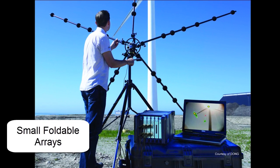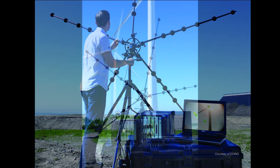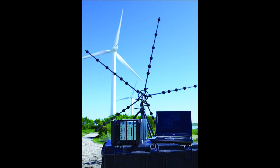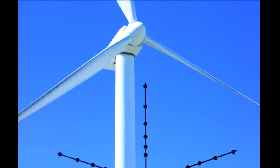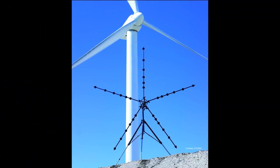Small, foldable arrays can be used to give an overview of the acoustical conditions, whereas large, ground-based arrays are required to obtain sufficient resolution to distinguish between leading and trailing edges of individual wind turbine blades.